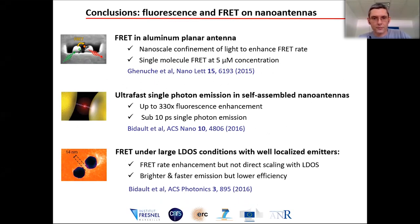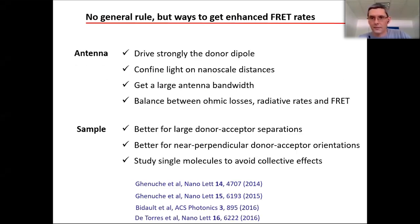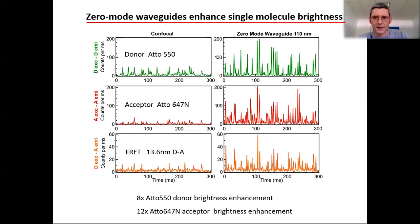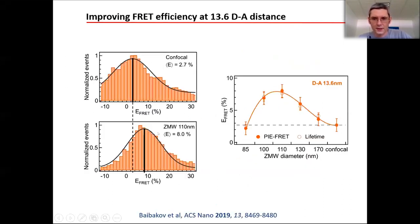During Q&A, a question arose about how FRET is tracked — whether through brightness of the donor or time decay of the acceptor. Jerome clarified: it is the brightness of the acceptor and the time decay of the donor. In the presence of the acceptor, the donor emits faster, so the donor fluorescence lifetime is reduced; and separately, the acceptor becomes brighter.